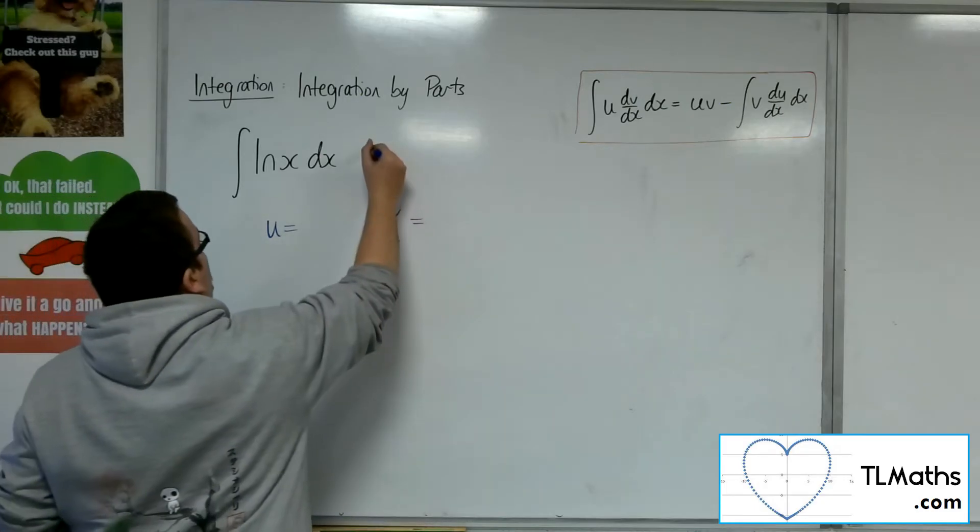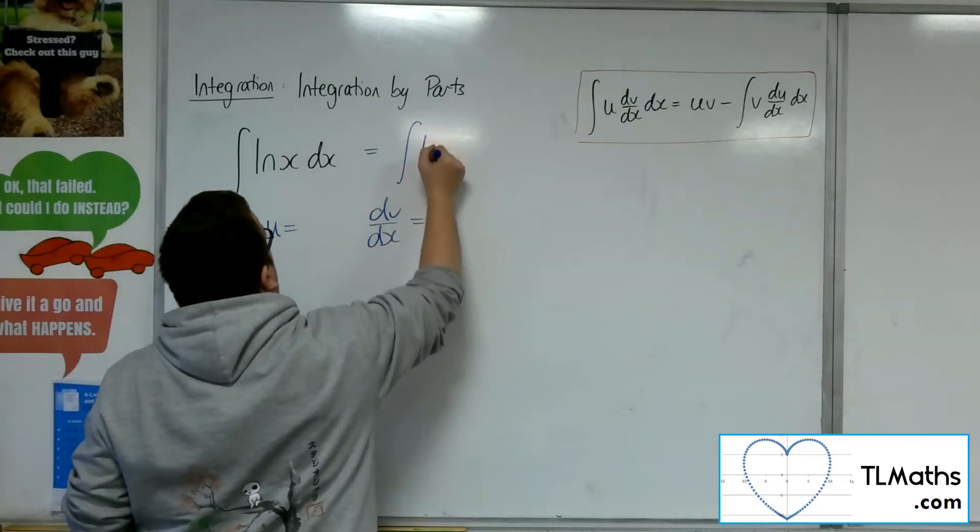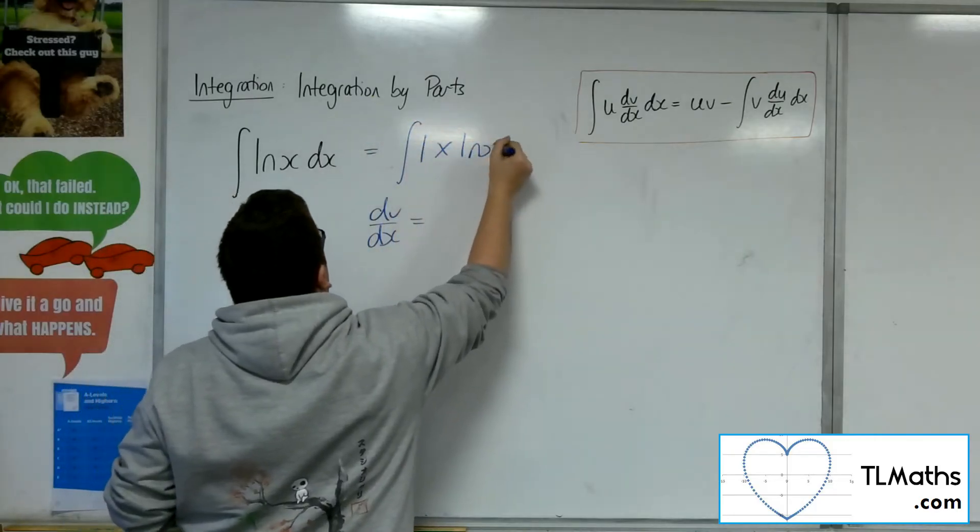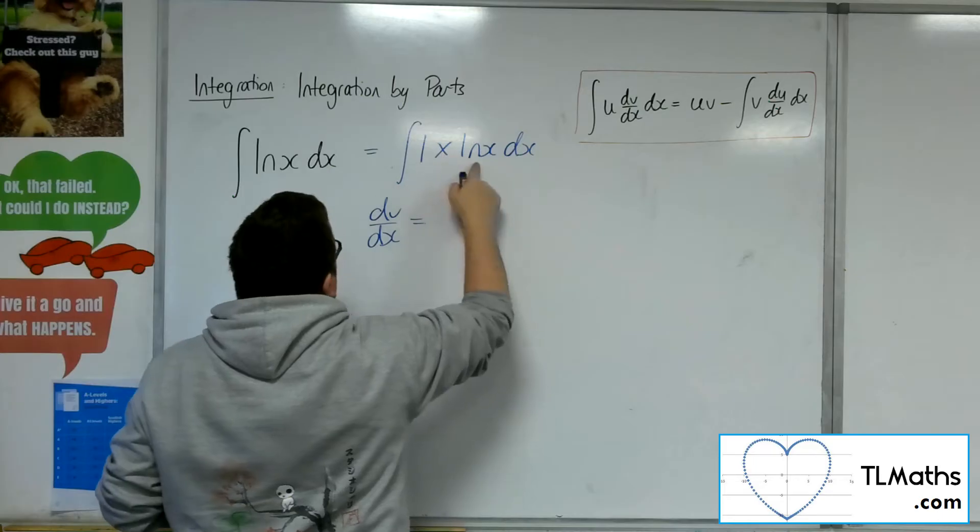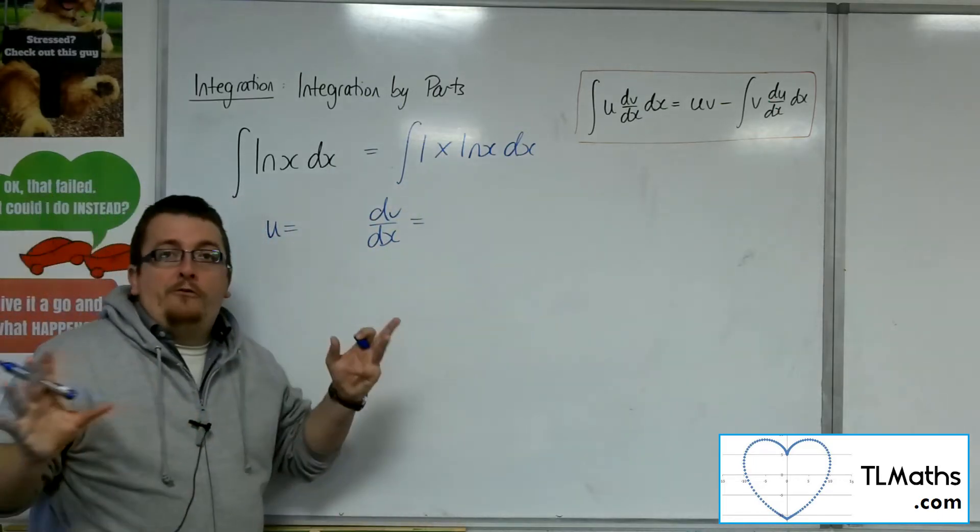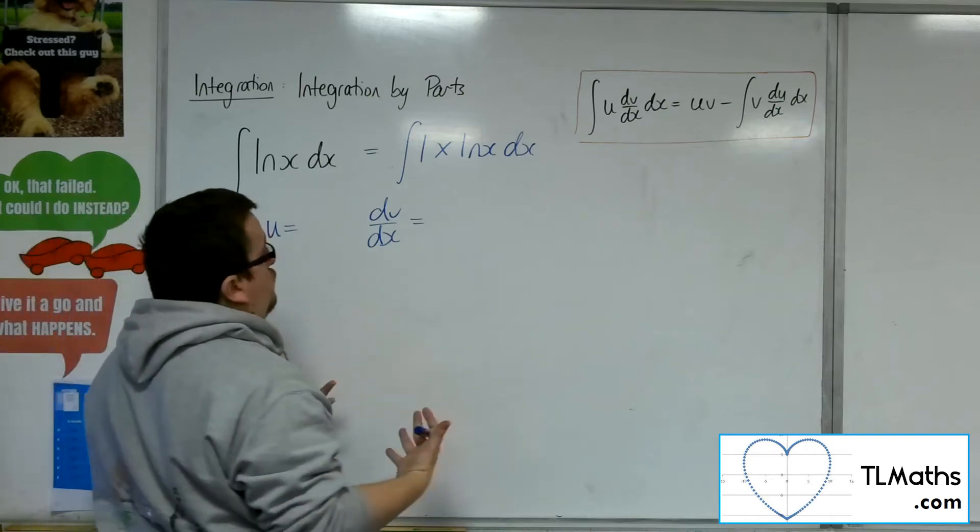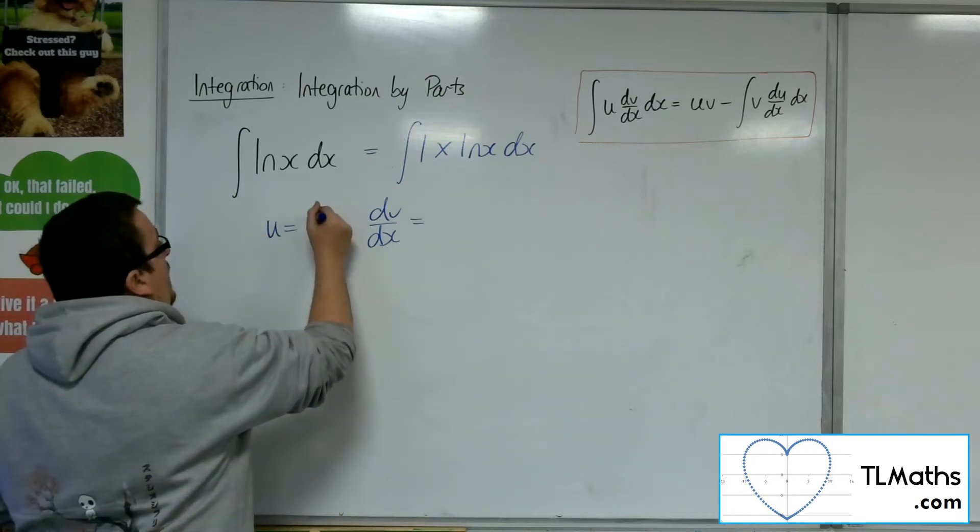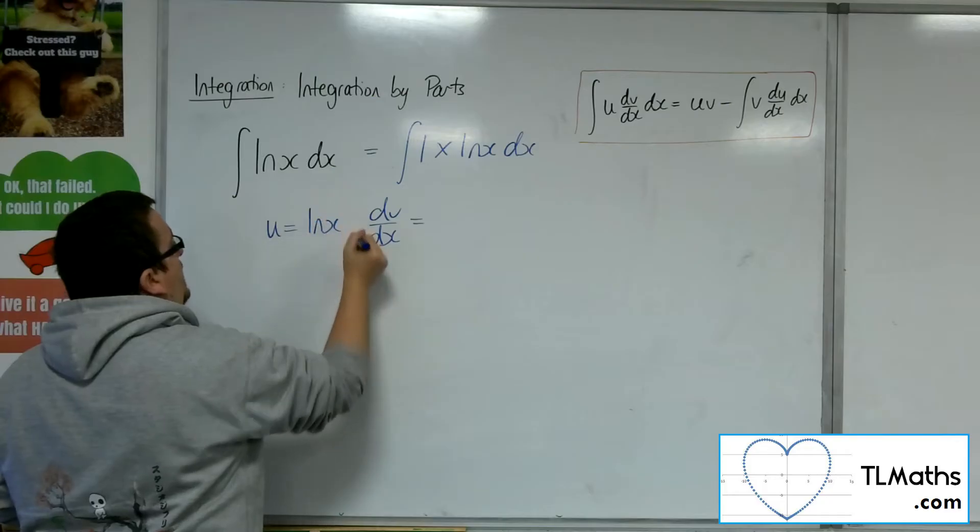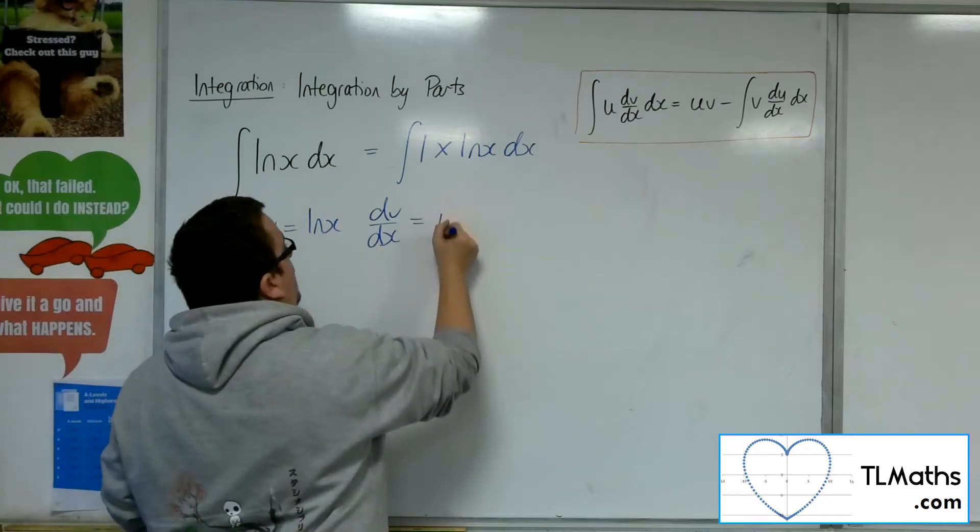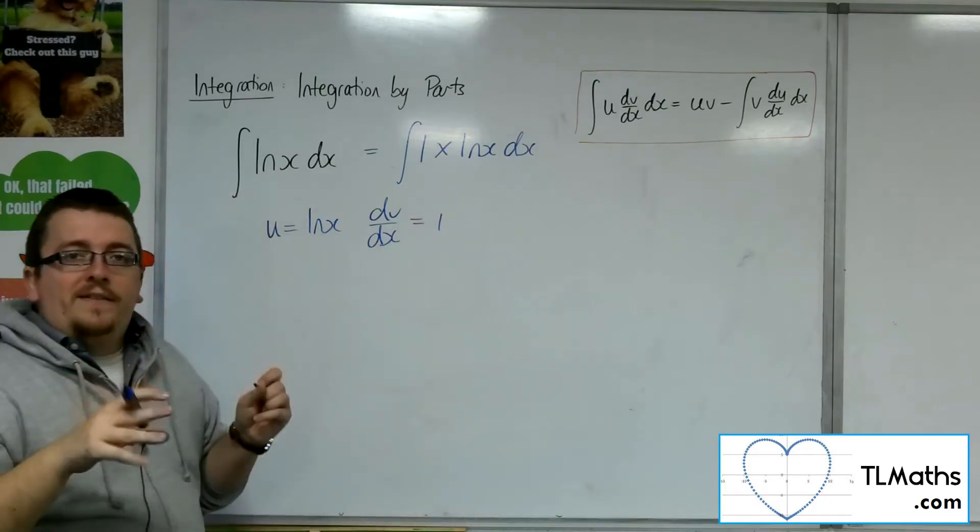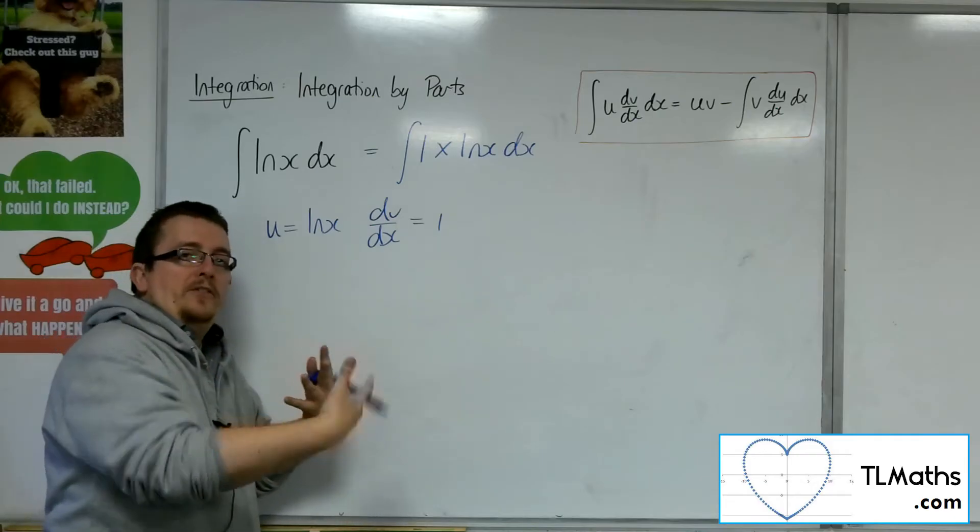So what we do is if I write that as 1 times log x dx, I do now have a product of two functions. So using the LATE rule, that would say that the log x must be u and the dv by dx must be the 1, the algebra. It's like having 1x to the 0.